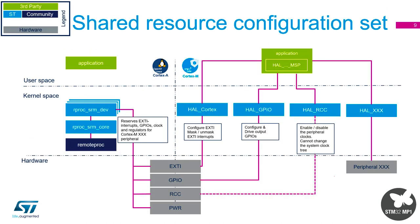Looking at the shared resources diagram: the system resource manager on the left is in kernel space, using the remote proc community driver. It reserves interrupts, GPIO clocks, and regulators for Cortex M peripherals based on what's in the device tree. External interrupts, GPIOs, clocks, and power all get reserved on the A7 side. The external interrupts can be configured and changed from the M4 side using hardware semaphores. GPIOs can be configured and drive output changed from the M4 side, but for reset and clock control you can only enable or disable the peripheral clock — you can't change main system clock trees.